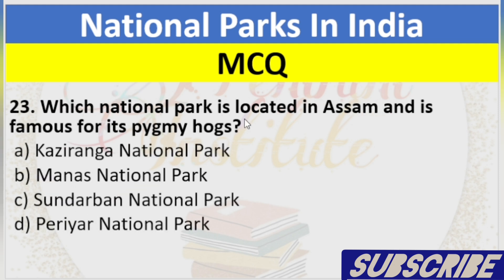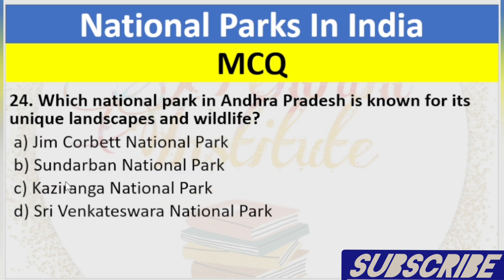Question 23: Which National Park is located in Assam and is famous for its pygmy hogs? A. Kaziranga National Park, B. Manas National Park, C. Sundarbans National Park, D. Periyar National Park. Answer: B. Manas National Park.